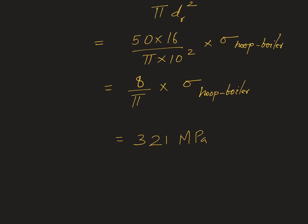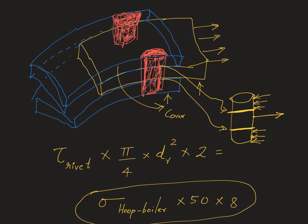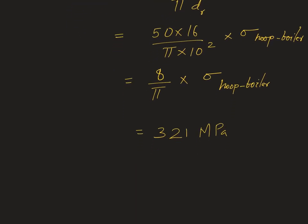The key takeaways from this problem: when computing hoop stresses in the cover plate, use the net width of 40 mm, not 50 mm, because 5 mm on each side is removed by the rivet hole. Also, since two cover plates are used, the rivets are in double shear — always use a factor of 2. And as always, free body diagrams help. Thanks for watching.